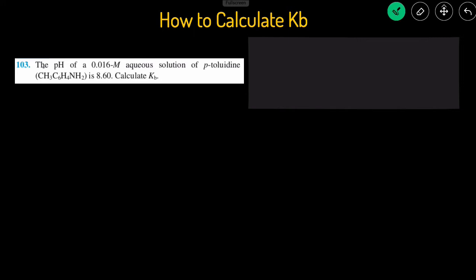Let's take a look at the problem. The pH of a 0.016 molar aqueous solution of this base is 8.6, calculate the Kb. In this problem, we're given the concentration of the base, and we're also given the pH of the base is 8.6, and we have to calculate Kb. So we can use a shortcut here,